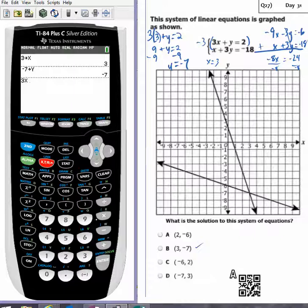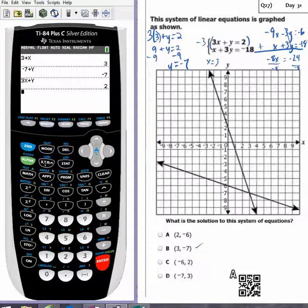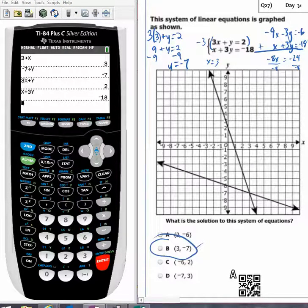3x plus y hit enter and I get 2 which works, and then x plus 3y hit enter and I get negative 18 which works. So now I know for a fact that that is right.